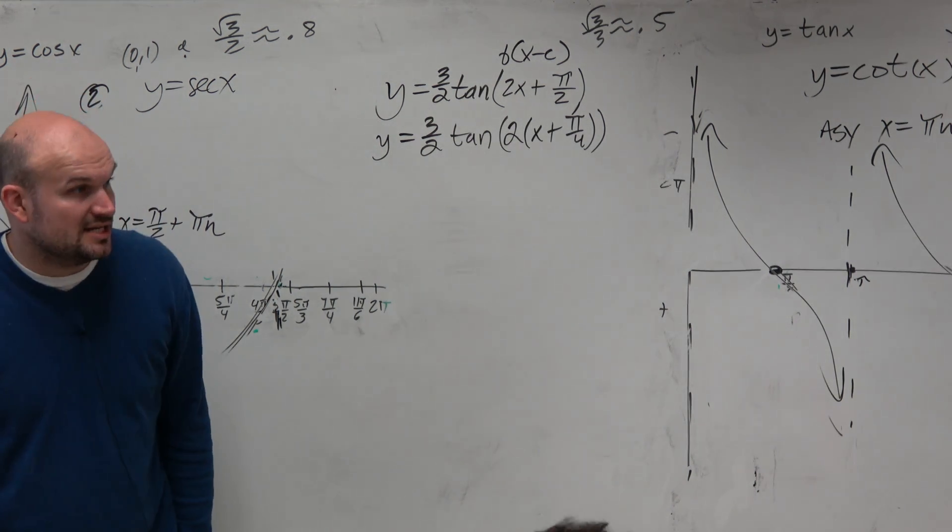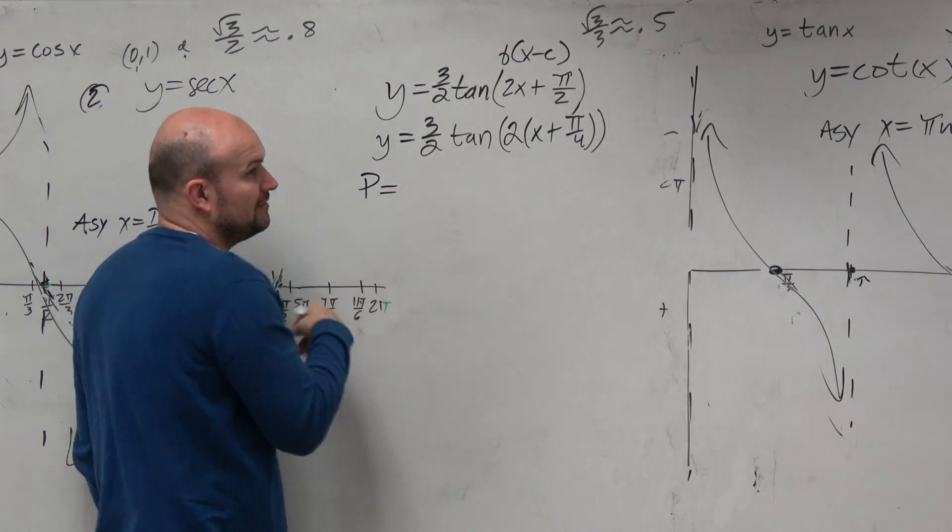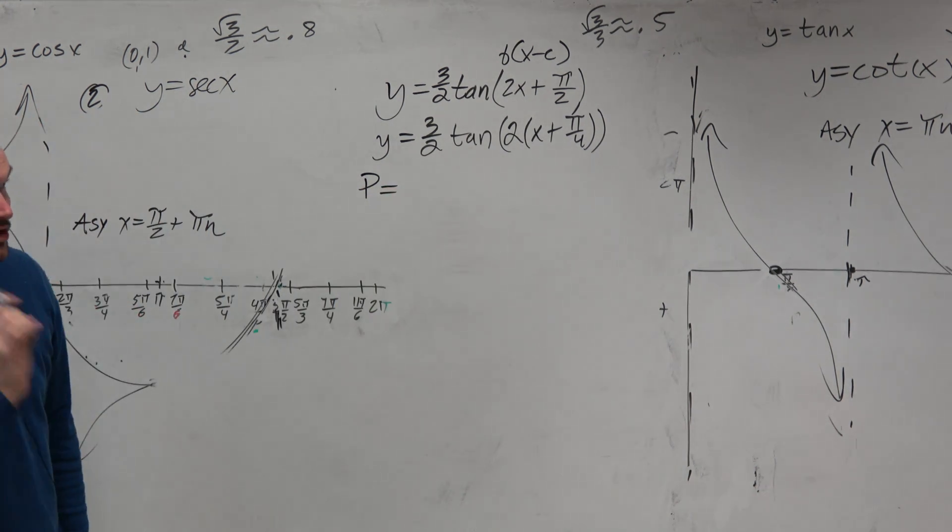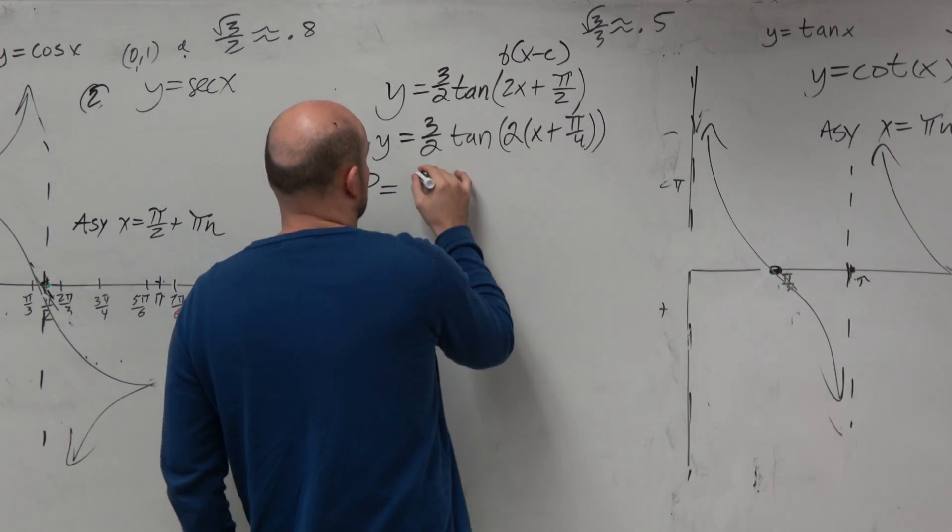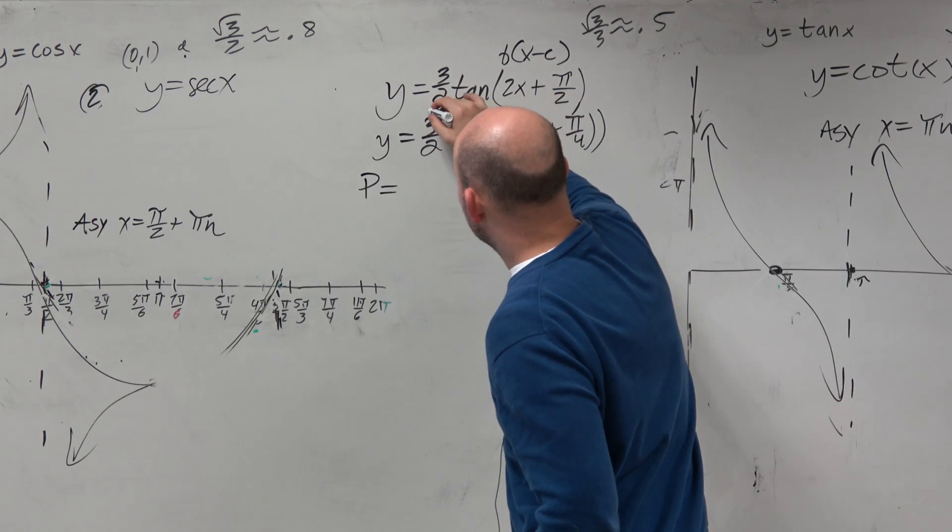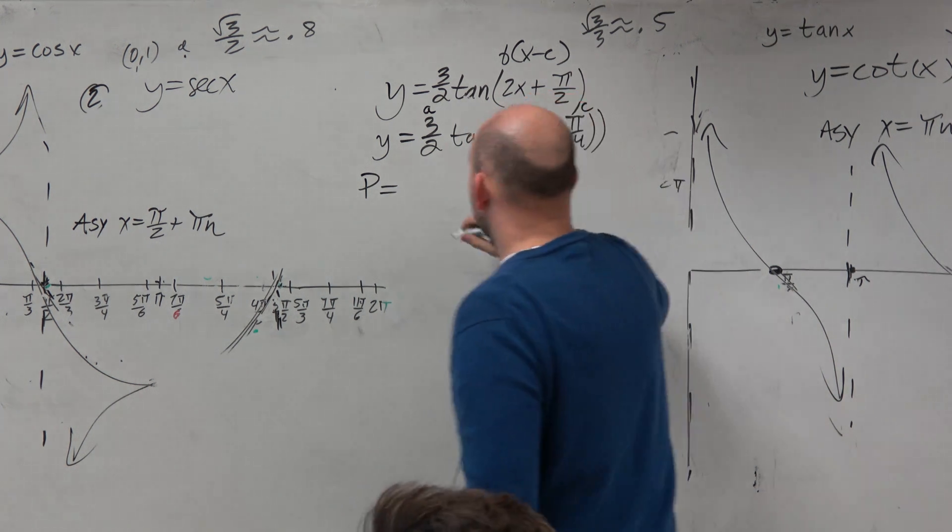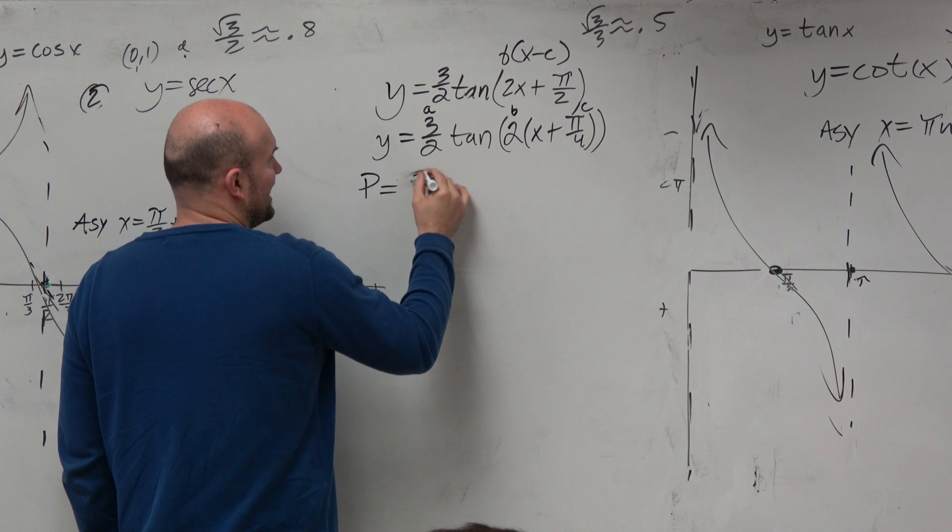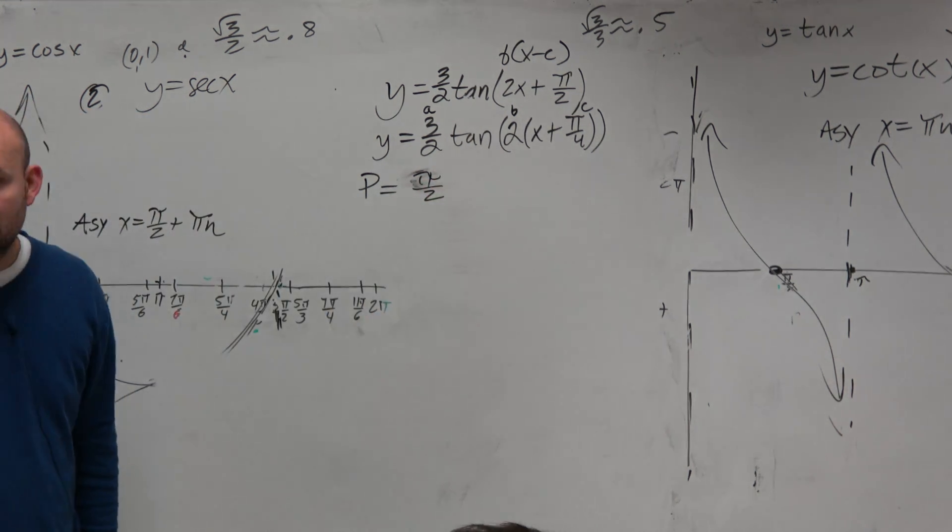Now let's discuss what is some of the topics or information we know. The period, remember guys, for tangent as well as for cotangent, the period is going to be pi divided by b. So our b, so here's our a, here's our b, and here's our c. So b is pi divided by 2. Not really anything else we need to do there. We got it.